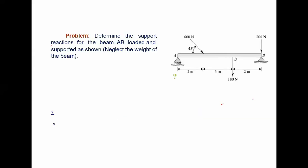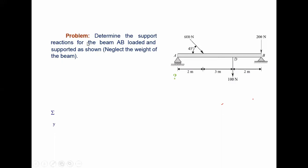Now let's solve one problem and practice applying the concept of equilibrium of rigid bodies. We have to determine the support reactions — what kind of reactions are being produced at the supports. The beam AB is loaded and supported as shown. You have to neglect the weight of the beam, so you need not worry about the force produced by the weight of the beam.